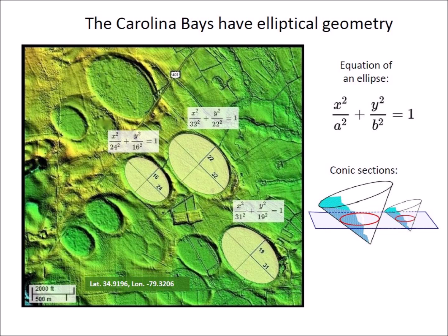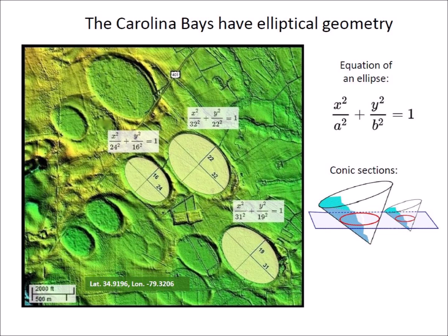The major axis of Carolina Bays and the Nebraska Rainwater Basins have radial alignments that converge at Saginaw Bay, which was the site of the extraterrestrial impact. Glaciarized boulders that fell on rivers created splash chevrons that overlaid some bays. The chevrons are only on the east banks of the rivers because the splashes were blown by the strong wind of the jet stream that had been brought close to the surface by the collapsing ejecta curtain.